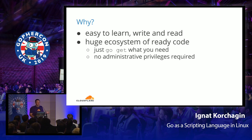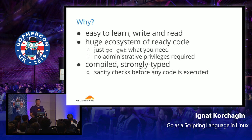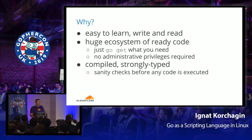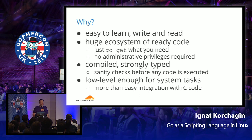Go has a huge ecosystem of already-ready code — you don't need to write everything from scratch. If you see a nice library, you just go get it into your environment without needing administrative privileges. It's also compiled and strongly typed, so imagine writing a bash script for a complex migration that's 1,000 lines — it executes the first 500 lines, then hits a typo and your system is in an inconsistent state. With a compiled, strongly-typed language, the compiler does sanity checks before executing. And Go is also low-level enough for system tasks — you can call kernel APIs and go as low-level as you want.